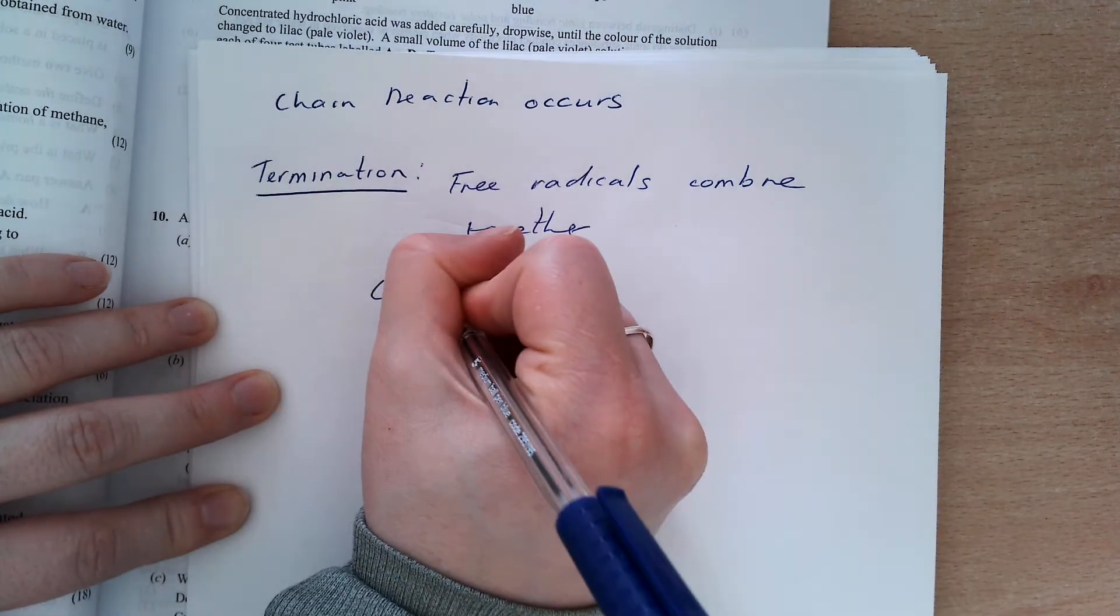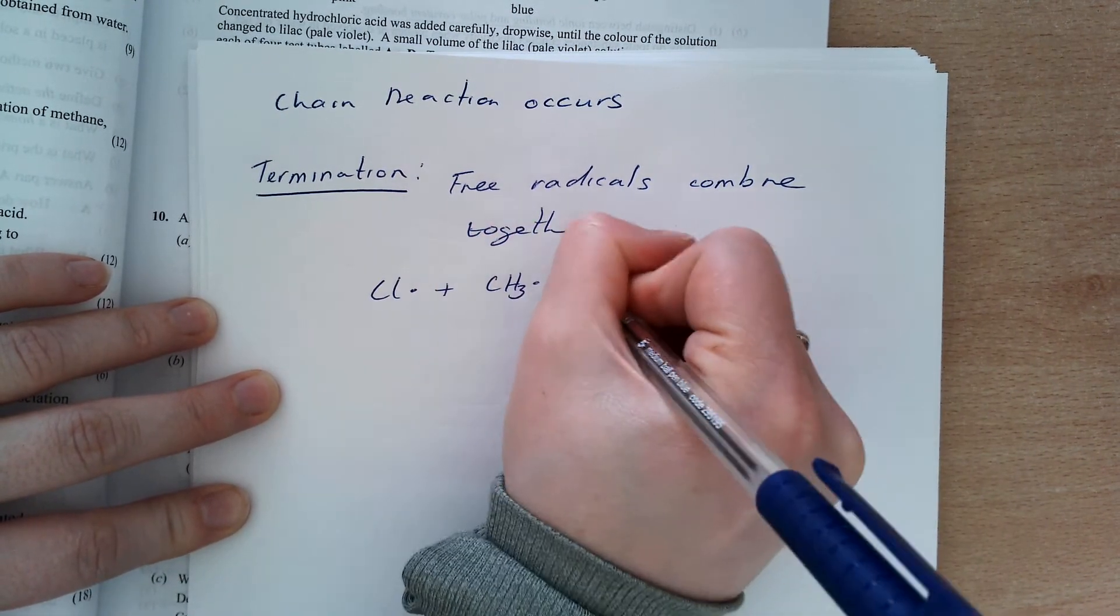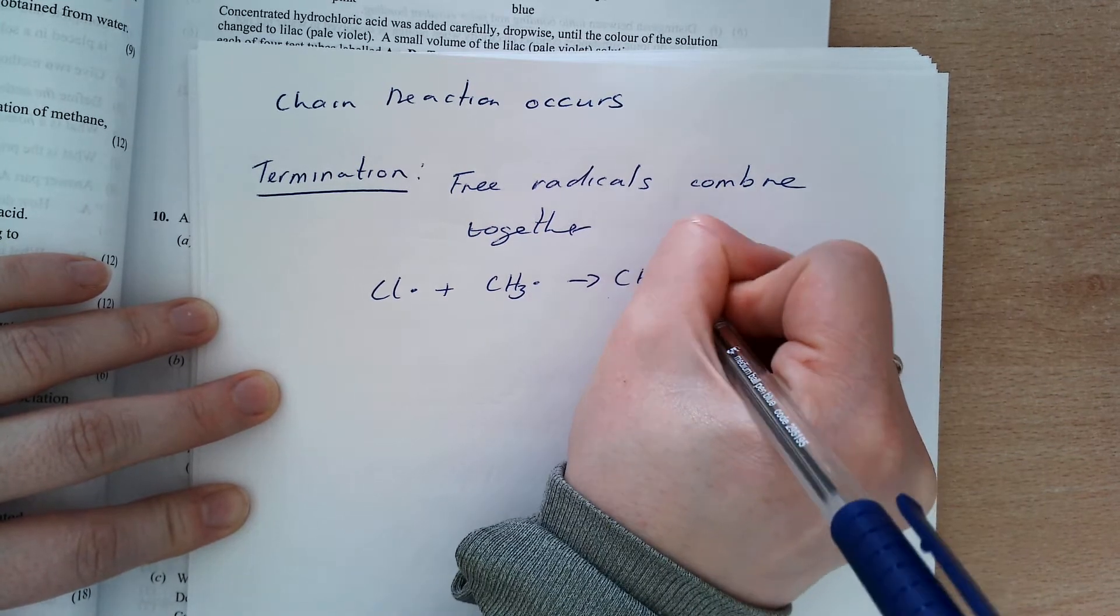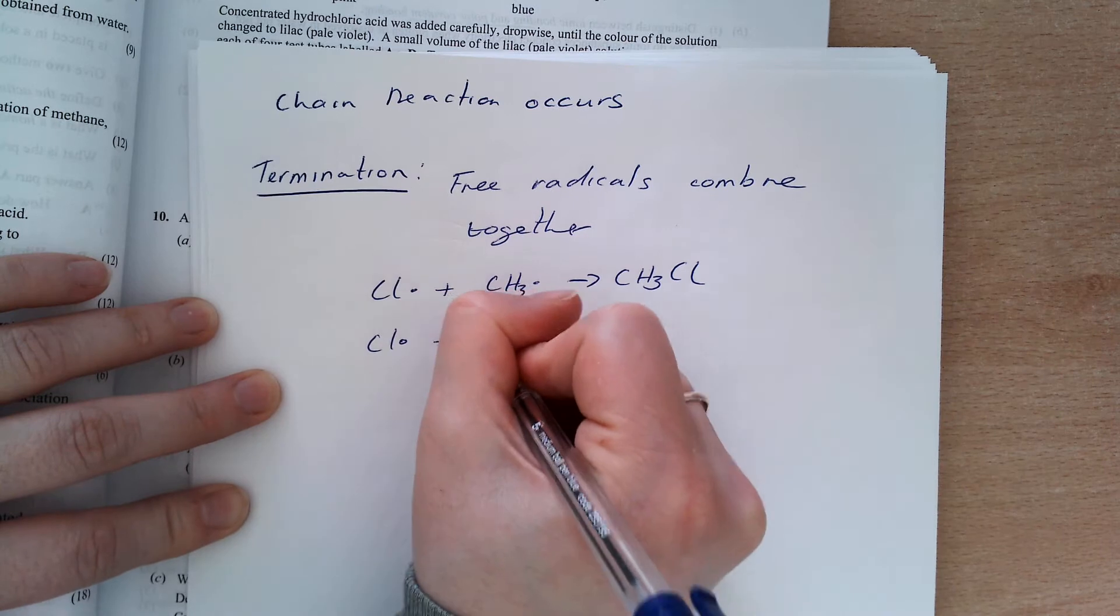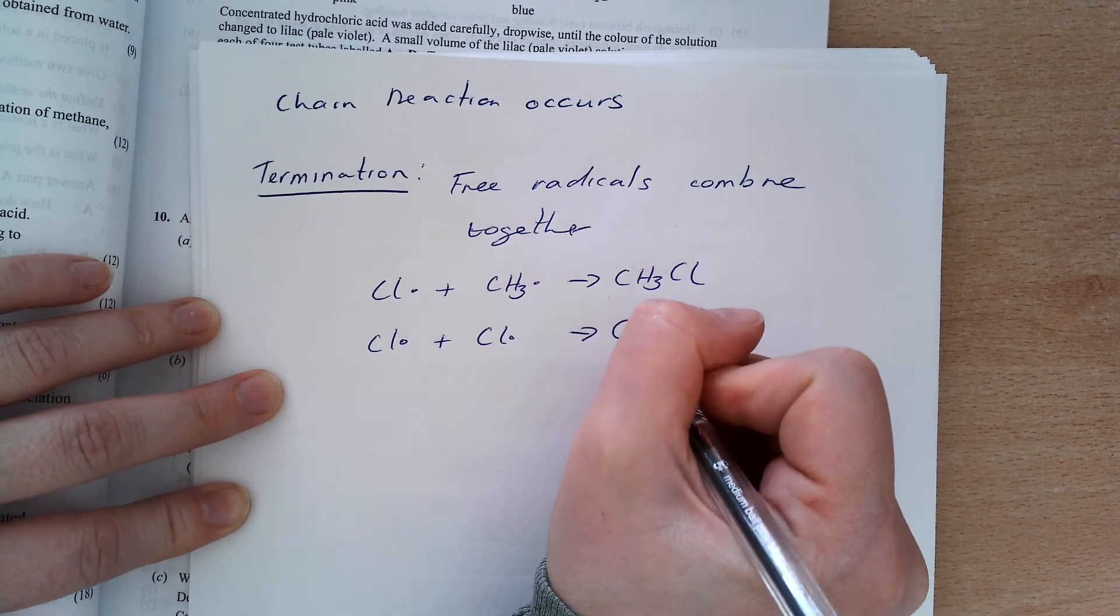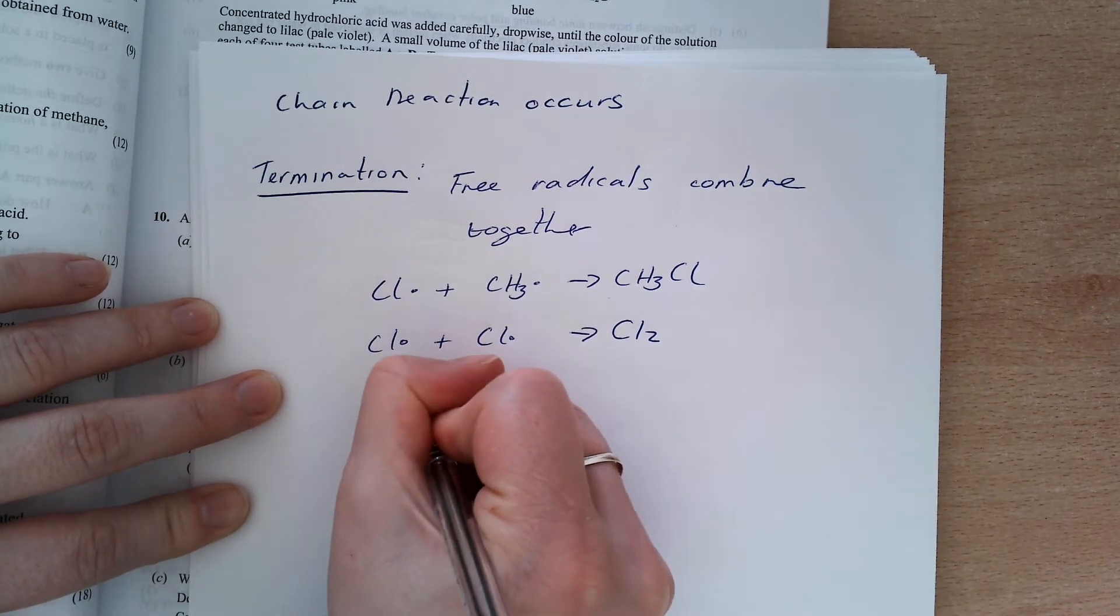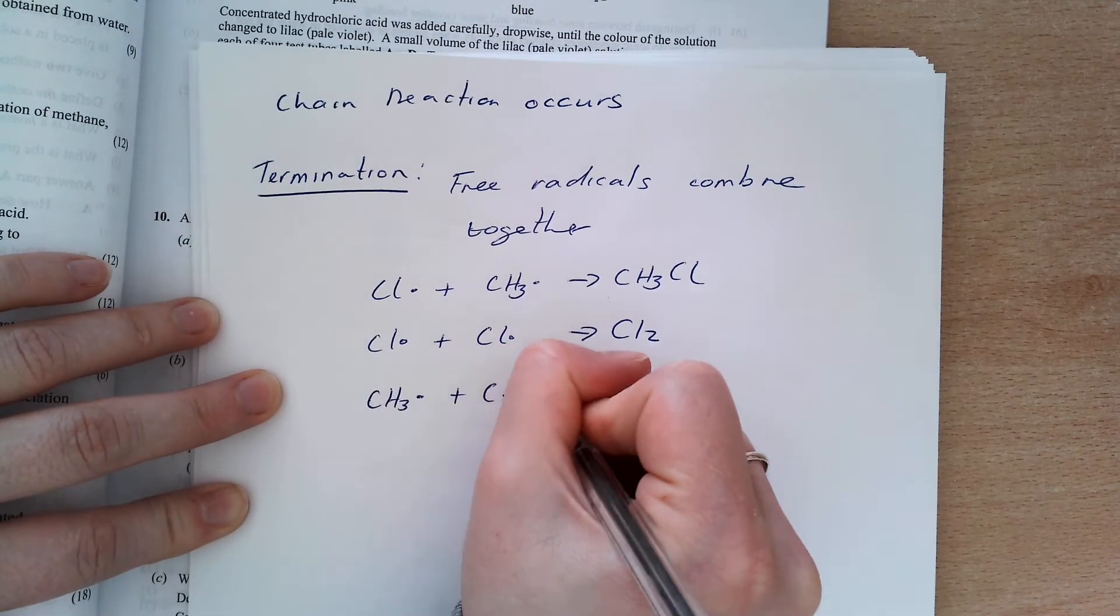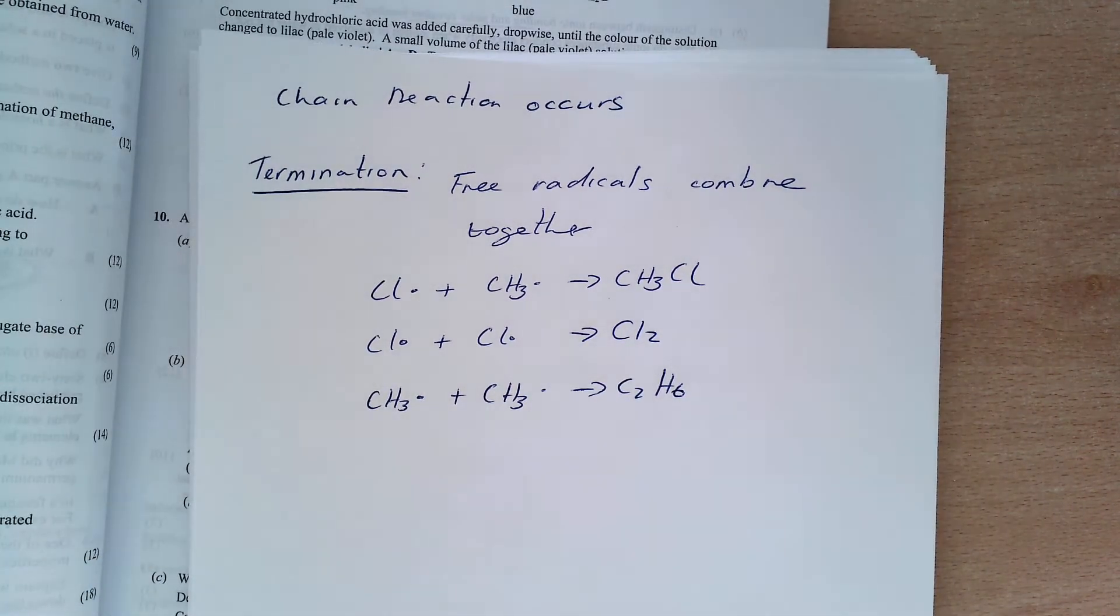So we have our chlorine-free radical combining with a methyl-free radical to form more chloro-methane. We have our chlorine-to-chlorine-free radicals can combine together to make Cl2. And finally, then, my two methyl-free radicals can combine to form ethane.